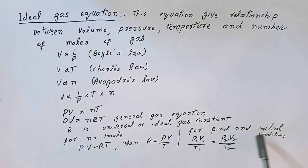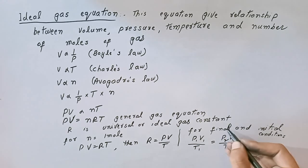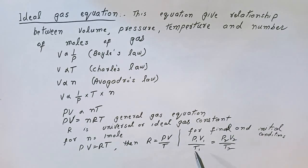For final and initial conditions, we write P1 V1 over T1 for initial state, P2 V2 over T2 for final state. This is called ideal gas equation.